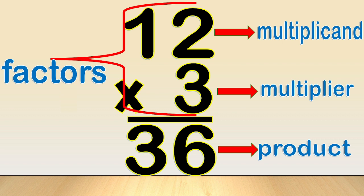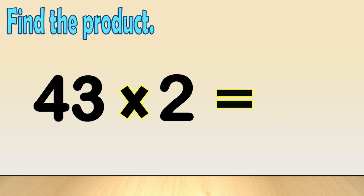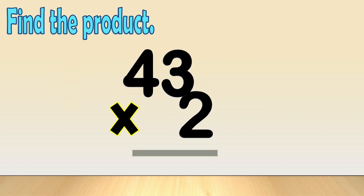Now, let's get started. Find the product: 43 times 2. First, arrange the numbers in columns like this.